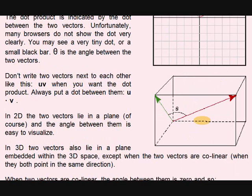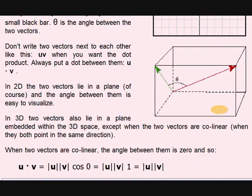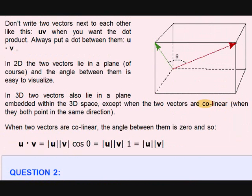Except when the two vectors are collinear. What is collinear? They both point in the same direction. It is called collinear. When two vectors are collinear, the angle between them is zero.